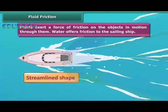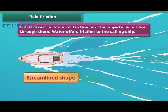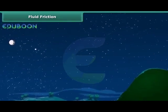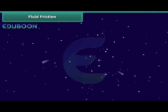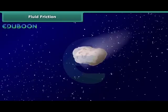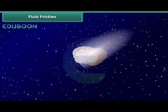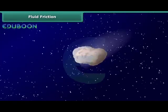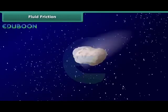Streamlined shape reduces friction from the fluid medium through which these objects move. Water offers friction to the sailing ship. In a clear night sky, shooting stars can be seen. These are small pieces of rock material floating in space called meteors. When a meteor enters from space into the earth's atmosphere, it rubs against the air. The speed of the meteor is extremely high, so it comes across very high friction while moving through air. This generates heat and burns with a flame.